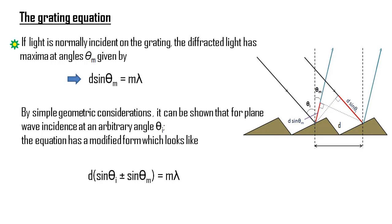To add a little more complexity to the equation, we let the wave be incident on the grating, making an angle theta sub i with the normal, in which case the grating equation has a form similar to this. The plus minus sign between the two sinusoidal terms is a matter of convention of measuring angles relative to the normal.